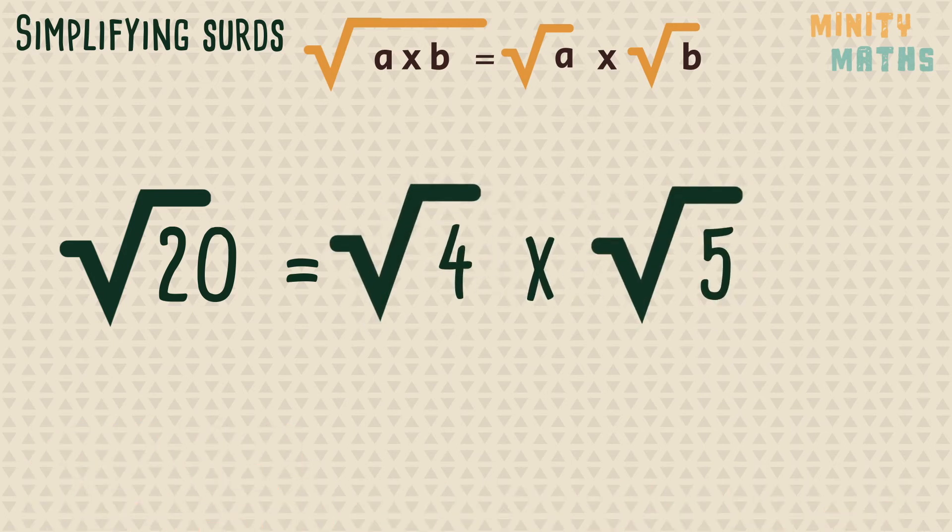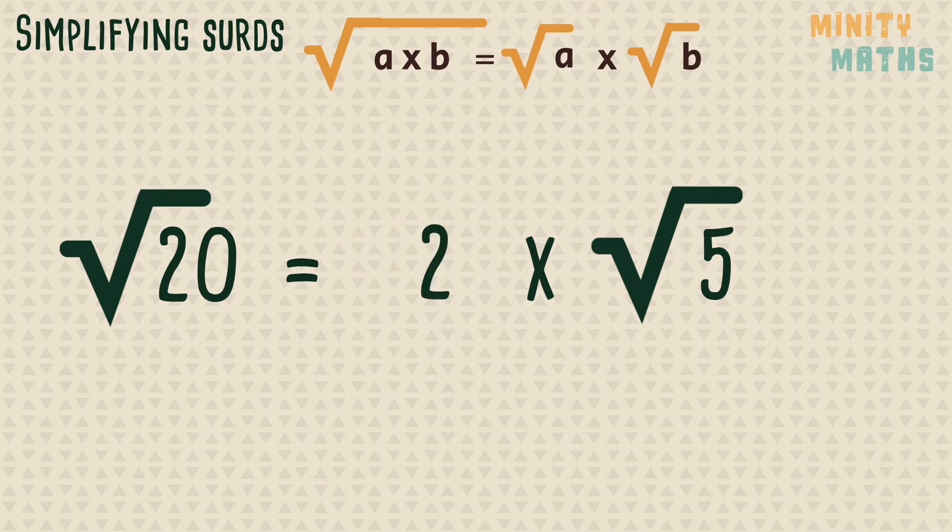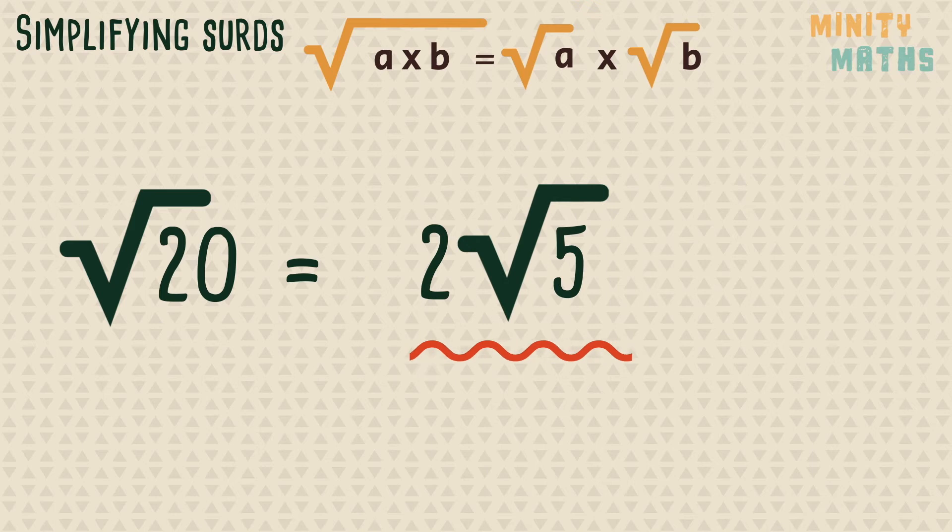We can now simplify this further by finding the square root of 4, which is 2. Whenever we have a whole number multiplied by a surd, we can omit the multiplication sign and write it like this.